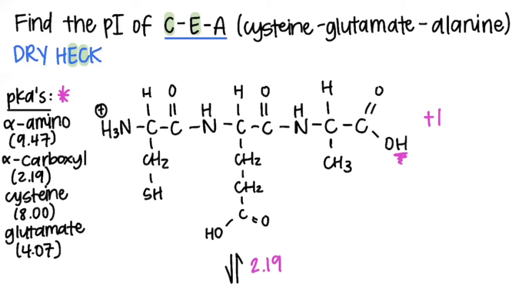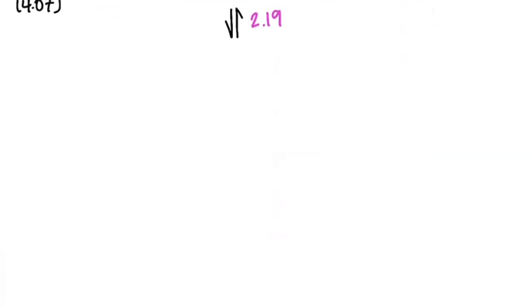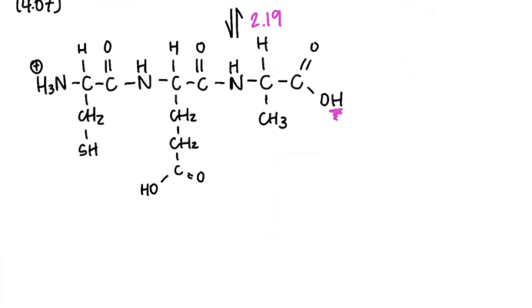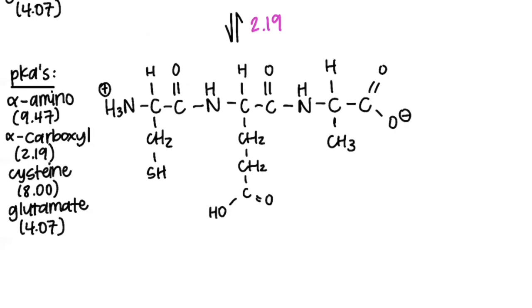So our next structure is going to be the same without that pink hydrogen. So I'm going to scroll down and I'm going to rewrite the structure here, deprotonated. I went ahead and copied the pKa list because we're going to need it again. Now we calculate the overall charge of the molecule again. In this case, we have a plus charge here and a minus charge here. They cancel out and the overall charge of this molecule is zero. Because we already deprotonated, we will not use the alpha-carboxyl pKa again.